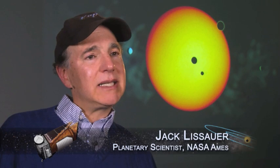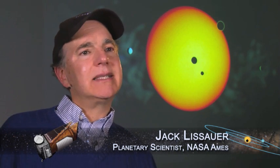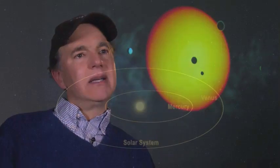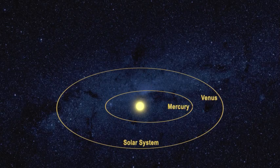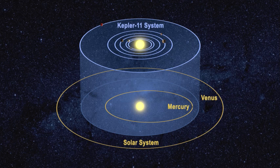The Kepler 11 planetary system is amazing. It's amazingly compact, amazingly flat. There's an amazingly large number of big planets orbiting close to their star. We didn't know such systems could even exist.